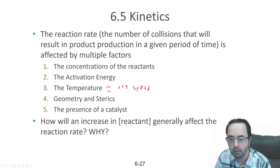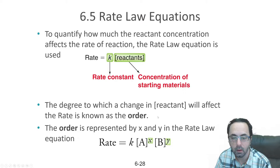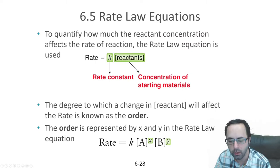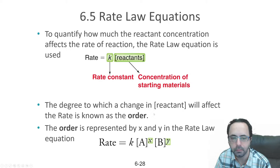An increase in the concentration of reactants affects the reaction rate because if there are more molecules, they are more likely to collide. Every collision is a possibility for a reaction. In general, the rate of a reaction is expressed by the rate law: the rate equals some rate constant K times the concentrations of reactants raised to some power. That power is referred to as the order. X and Y are the orders of the reaction with respect to reactants A and B.